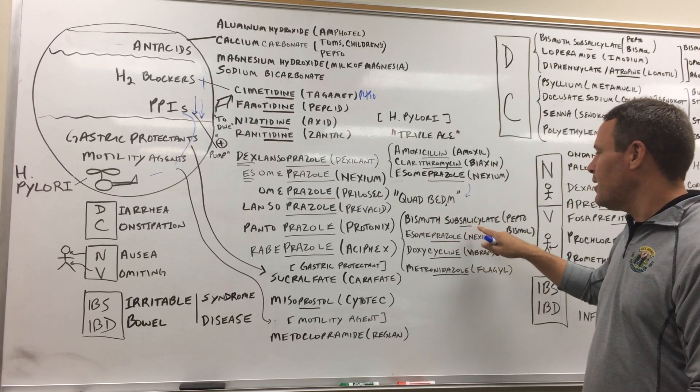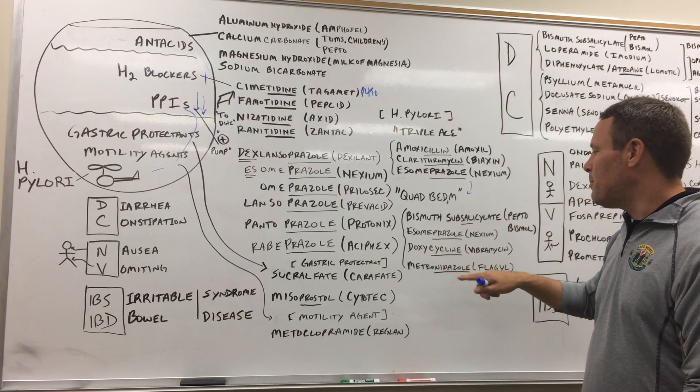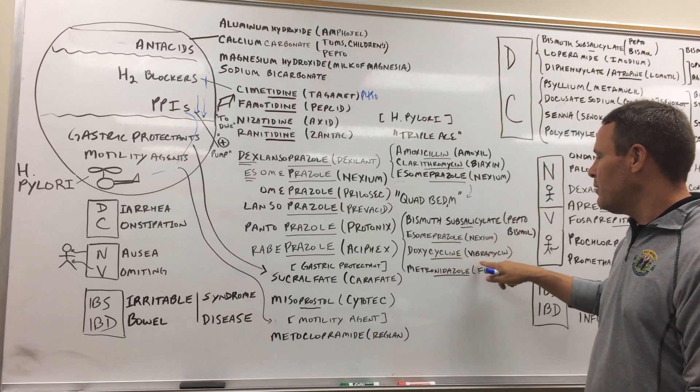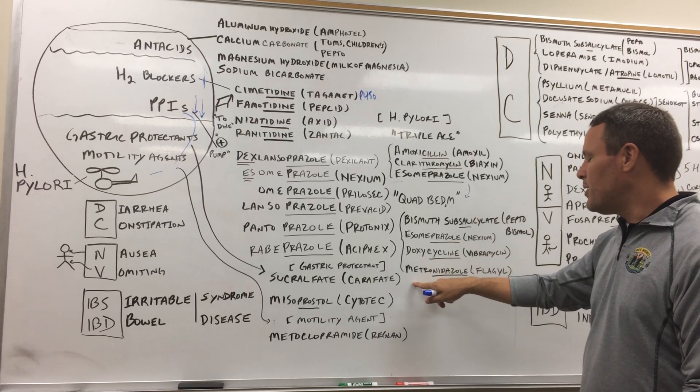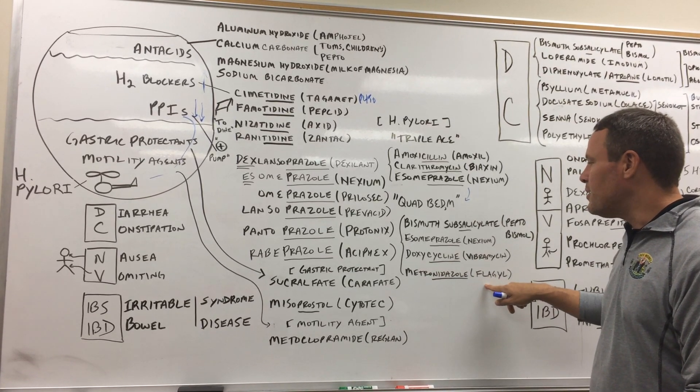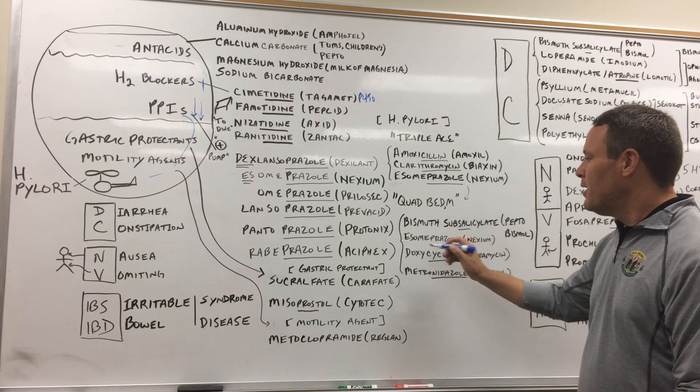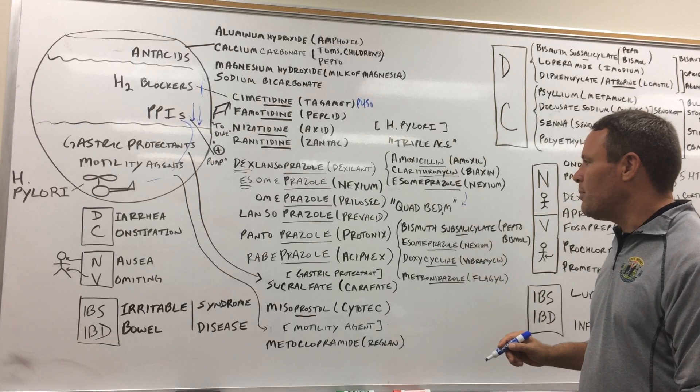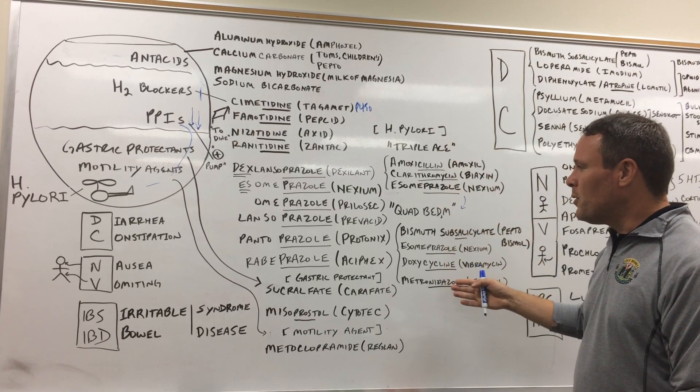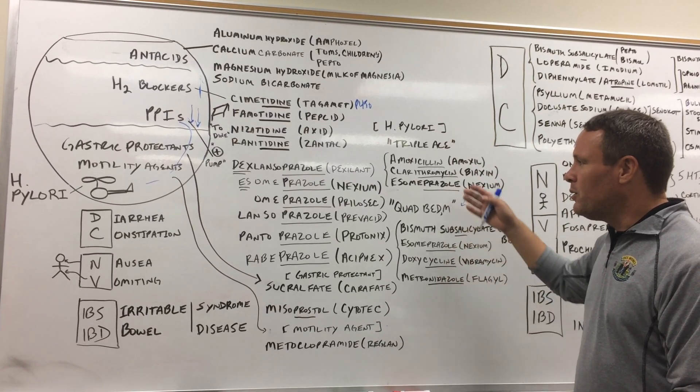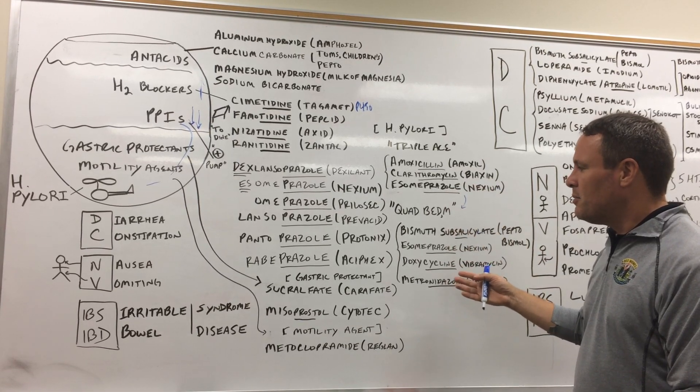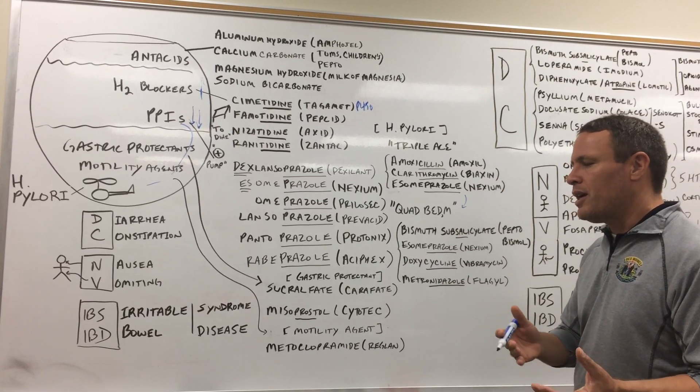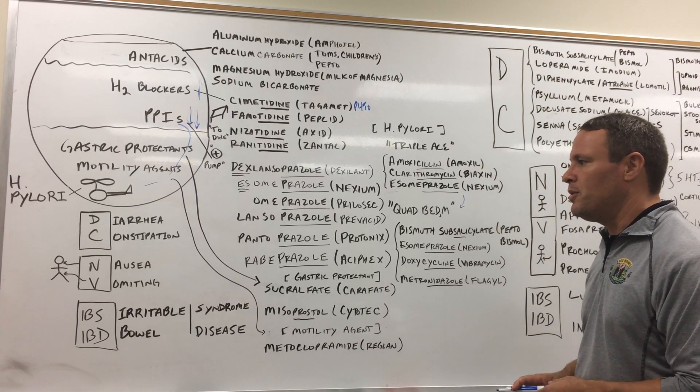So bismuth subsalicylate from the Pepto-Bismol, esomeprazole, which is Nexium, doxycycline, a tetracycline antibiotic, which is brand Vibramycin, and metronidazole, which is brand Flagyl. So again, we have an acid, something to reduce the acid, and three to attack the antibiotic. And again, what we're doing now is we're including other drug classes to make sure that we have an understanding of mechanisms, how we treat. And so we're kind of going a little bit from pharmacology to pharmacology and therapeutics.